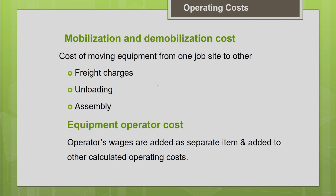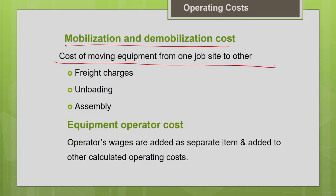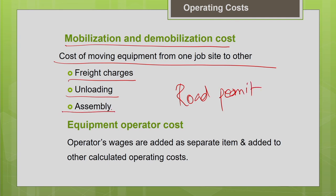Another component of operating cost is mobilization and demobilization cost — the cost of moving equipment from one job site to another. This includes freight charges, transportation charges, loading and unloading charges, road permit charges, and installation/assembly charges. Everything must be accounted for and converted to an hourly cost.